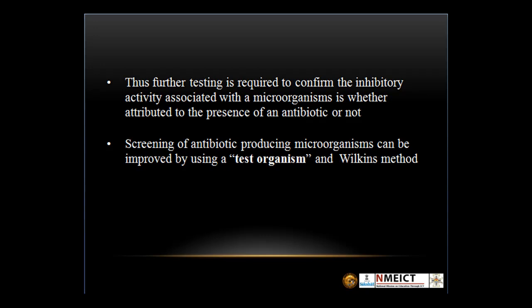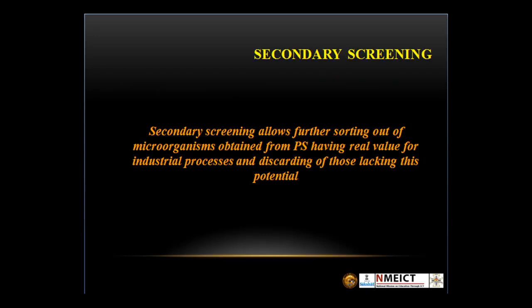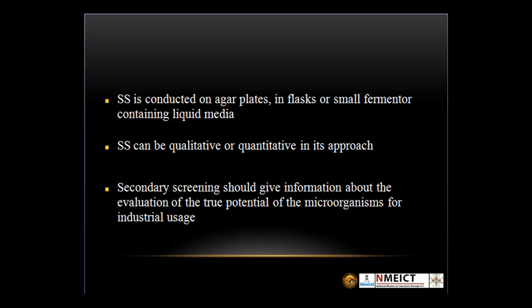Now, secondary screening. Secondary screening allows further sorting out of microorganisms obtained from primary screening having real value for industrial processes, and discarding those lacking this potential. Secondary screening is conducted on agar plates, in flasks, or in small fermenters containing appropriate liquid media. It can be quantitative or qualitative in its approach, and should give information about the evaluation of the true potential of microorganisms for industrial usage.